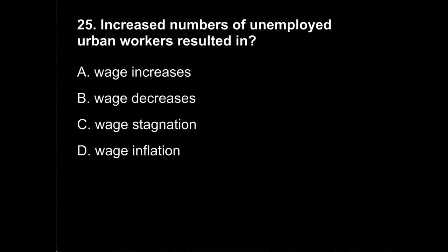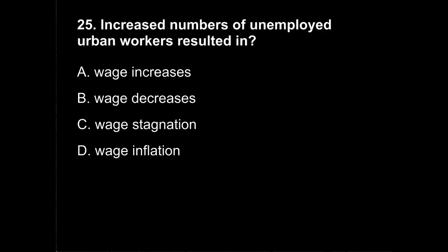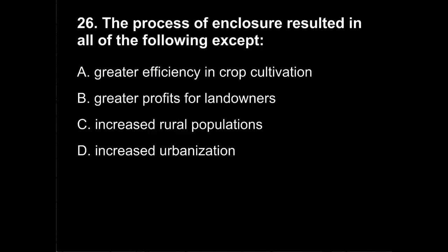Question 25. Increased numbers of unemployed urban workers resulted in: A, wage increases? B, wage decreases? C, wage stagnation? The process of enclosure resulted in all of the following except: A, greater efficiency in crop cultivation? B, greater profits for landowners?